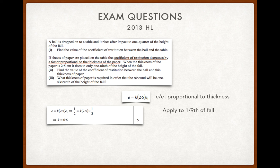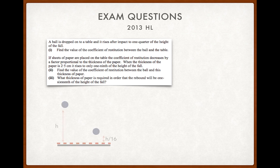So we're not there yet. For part 3, we're looking for what thickness of paper is required in order that the rebound will be 1/16th the height of the fall. So, we need to get the coefficient of restitution in that case. It'll work out as a quarter, we'll see. And then we'll use the same formula, e is equal to k times the thickness multiplied by, I'm going to call it e2 for the second thickness of paper. For the coefficient of restitution related to the second thickness of paper.